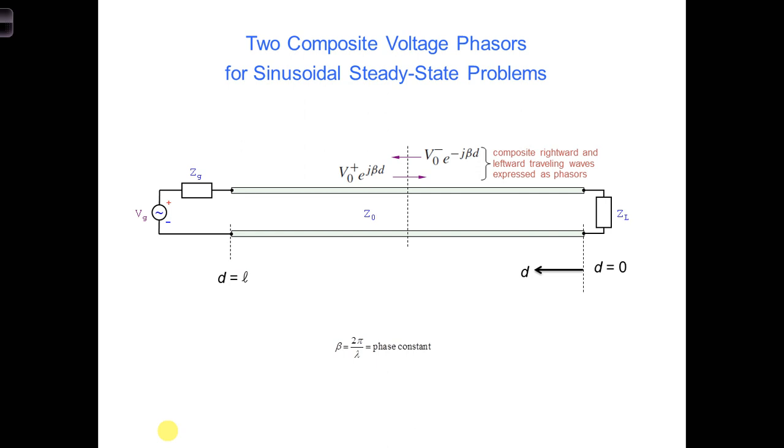One representing all the rightward traveling waves, all the waves traveling towards the load. So this V0 plus E to the J beta D represents all the V1 plus, V2 plus, V3 plus, and so forth waves. That, all combined, is the V0 plus voltage phasor.